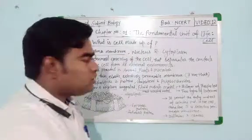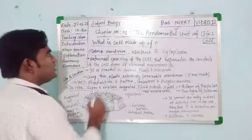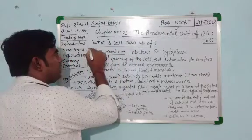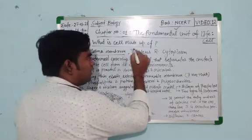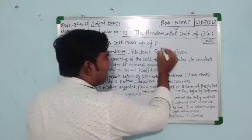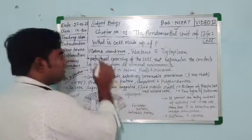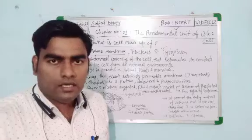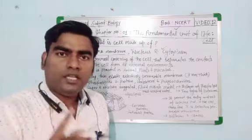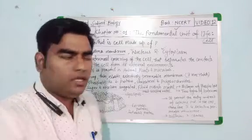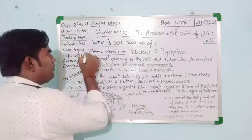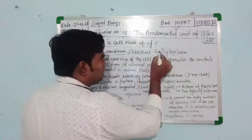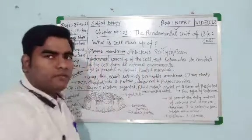The answer to the question is that a cell is made up of plasma membrane, nucleus, and cytoplasm. These are the three components of a cell: number 1 is plasma membrane, number 2 is nucleus, and number 3 is cytoplasm.